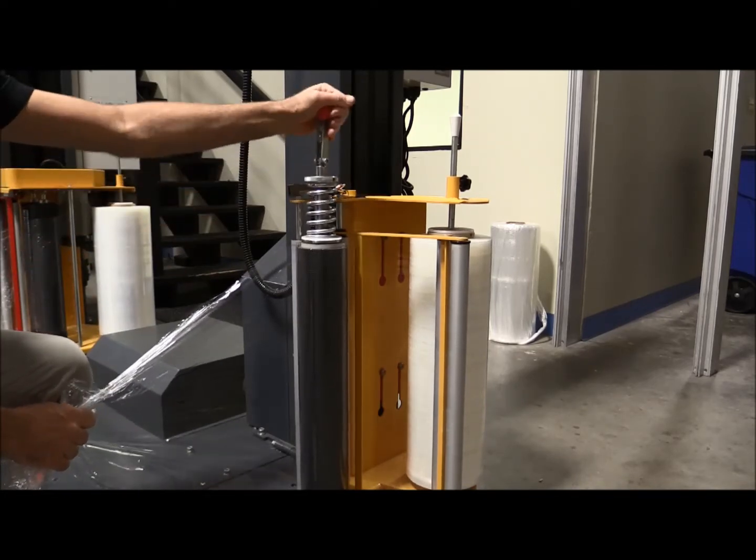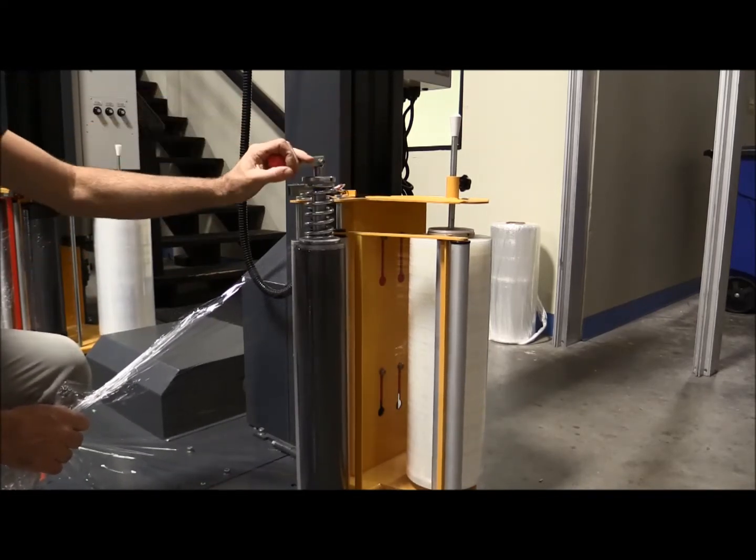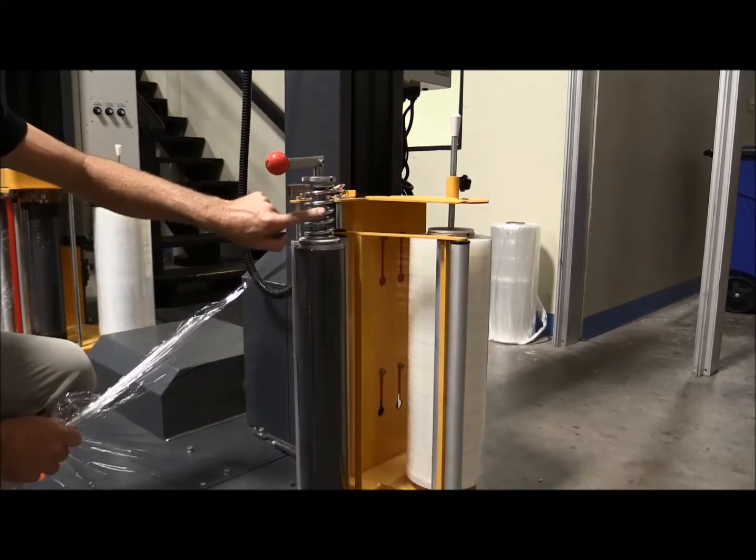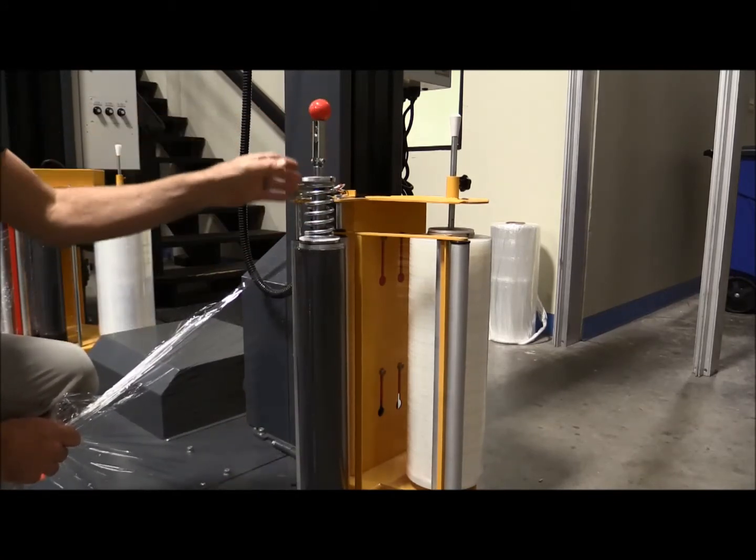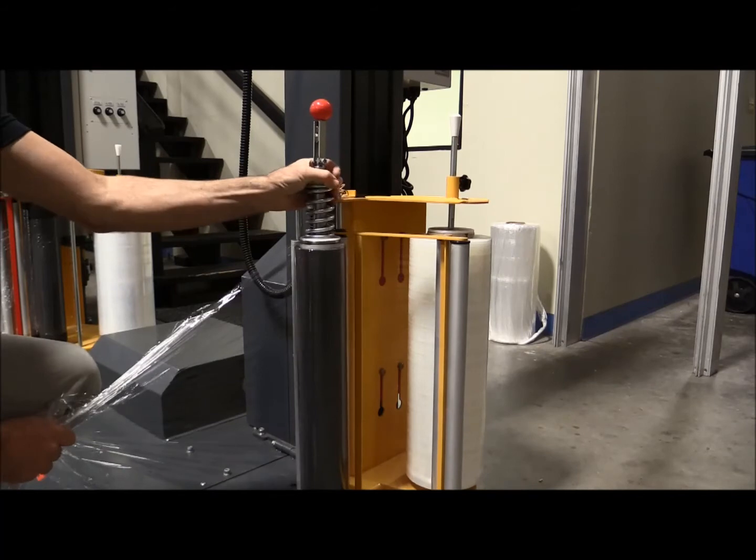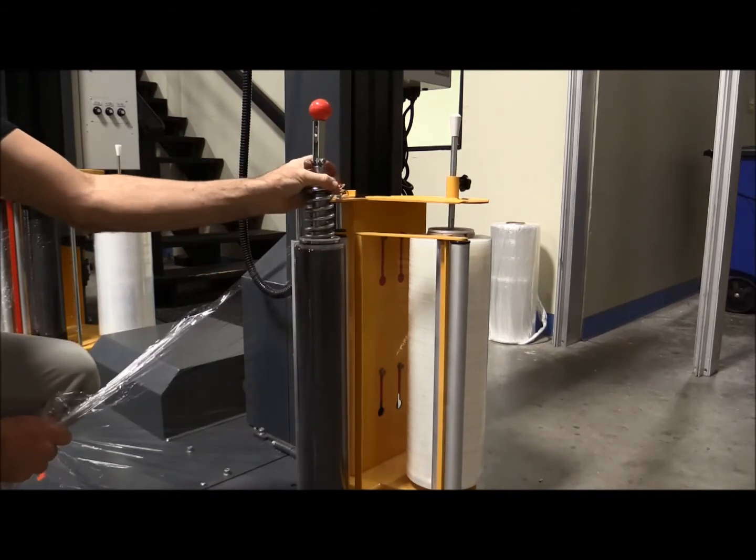So again, on and off - off is up, on is down - and we have a high pressure spring, and then we have an adjustment which is clockwise to increase the tension for a tighter pallet.